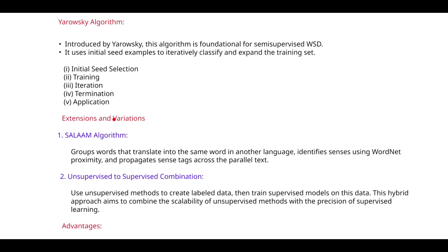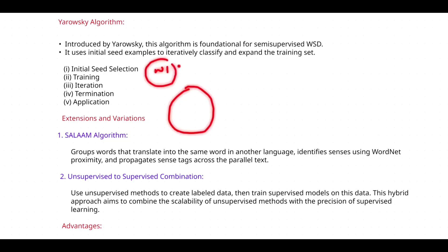Now let's look at the extensions and variations of the Yarowsky algorithm. The first is the Salam algorithm. This algorithm groups words that translate into the same word in another language — similar to clustering. Words in one language that share the same meaning as words in another language are grouped together. That is the main aim of the Salam algorithm.